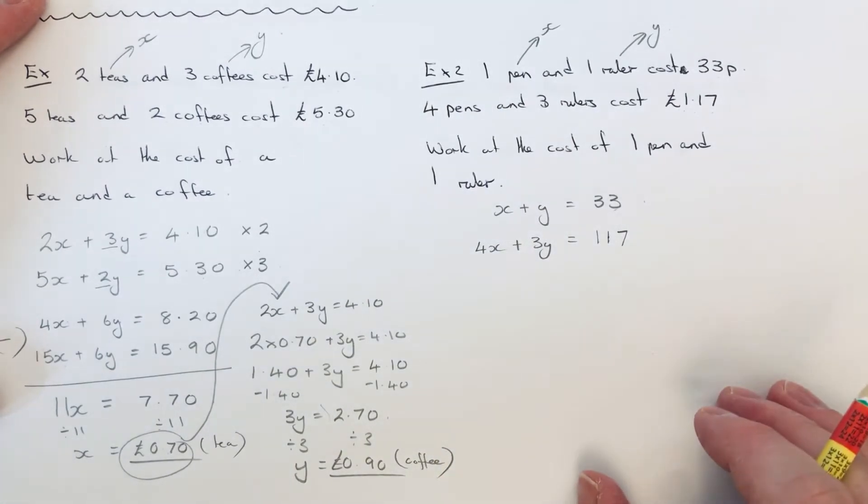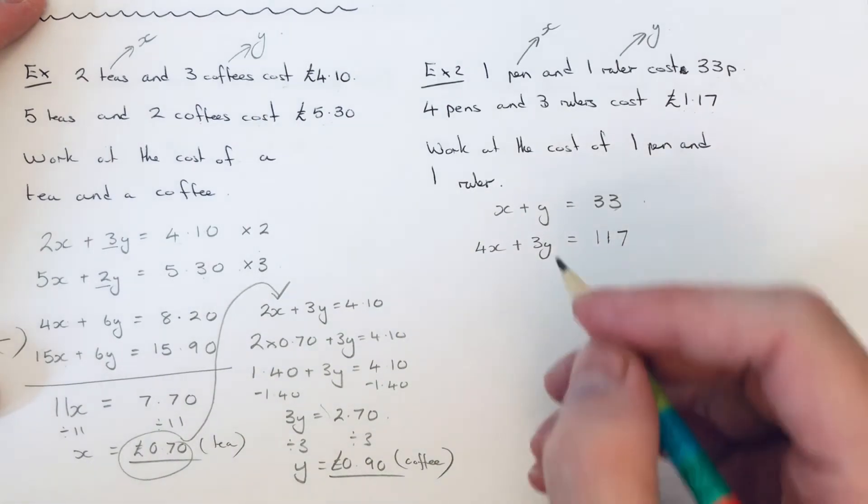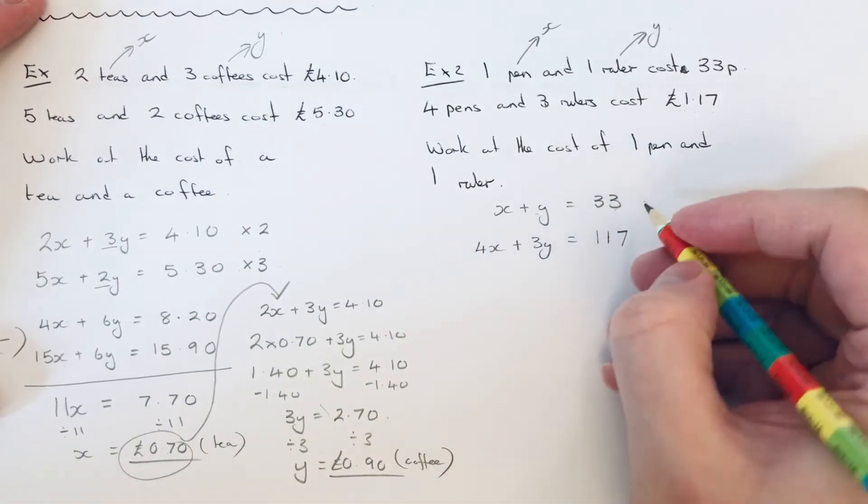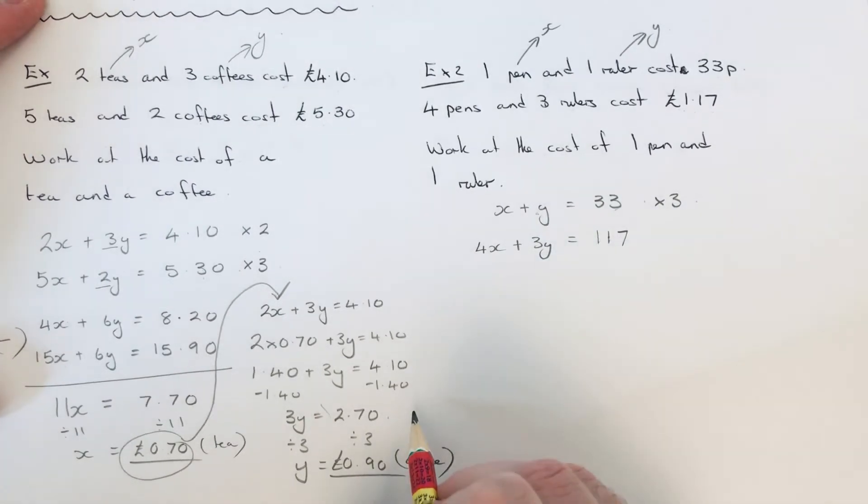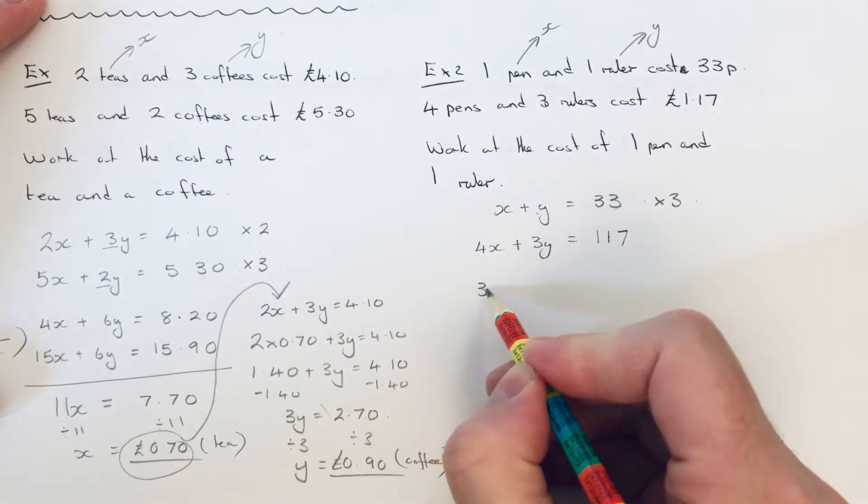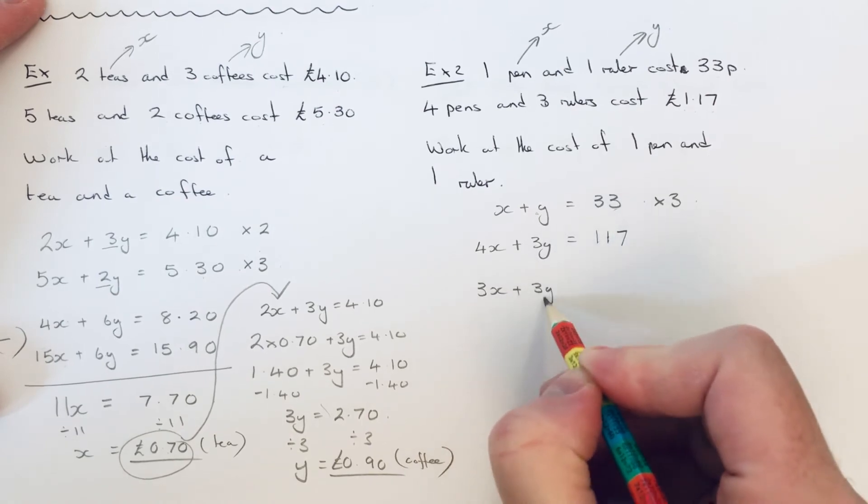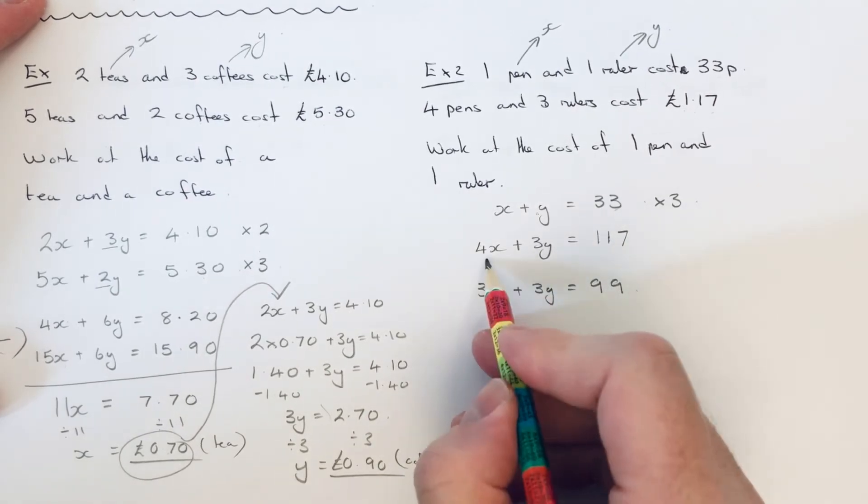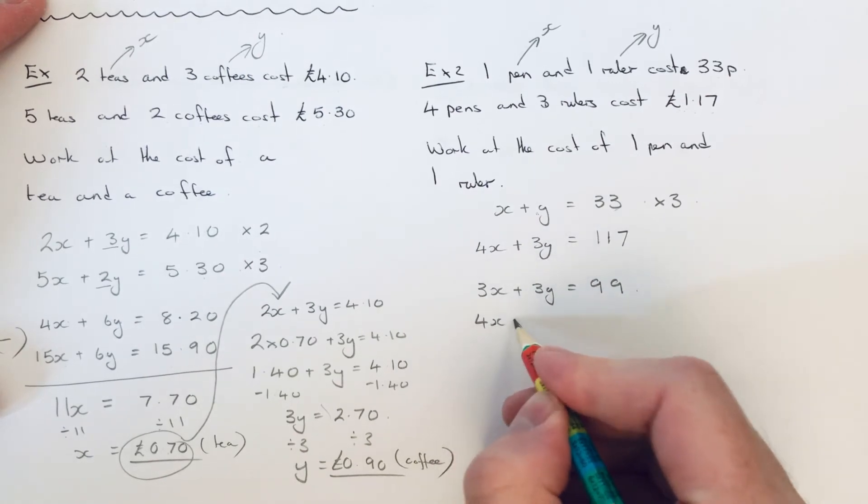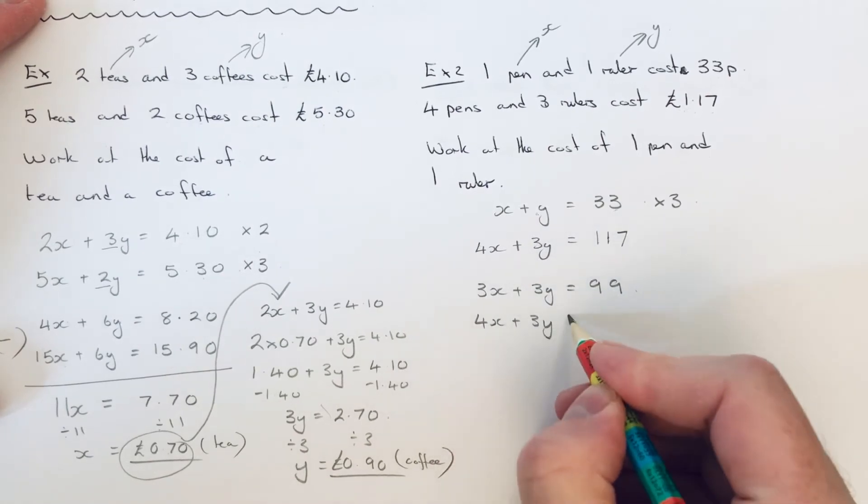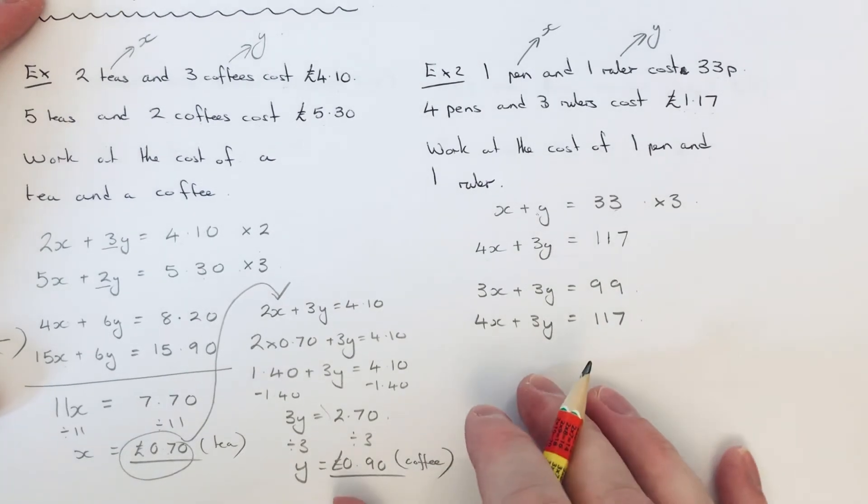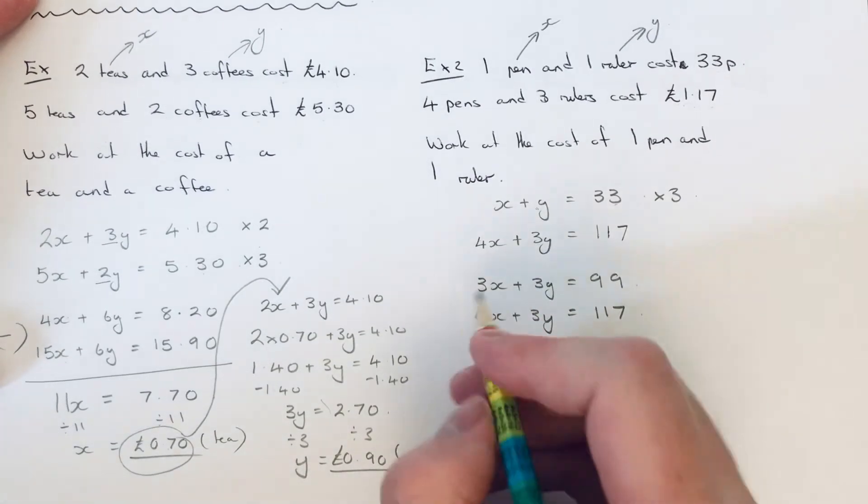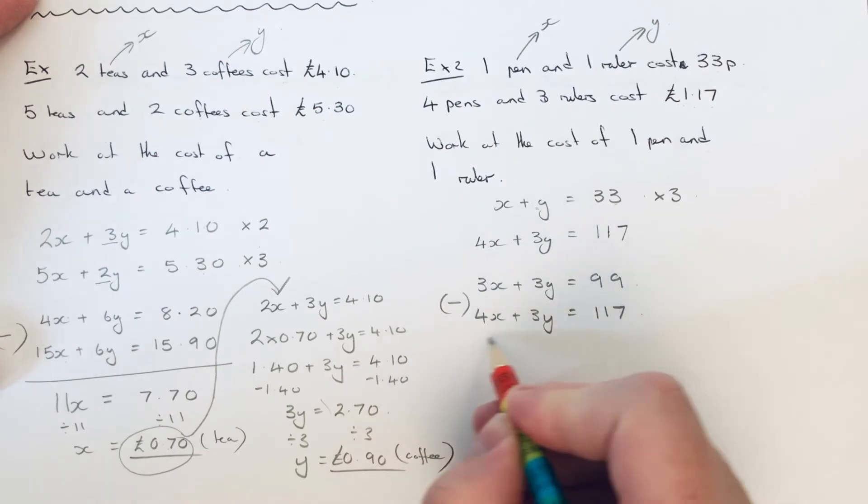So again let's eliminate the y variables. So to do that let's make the numbers before y the same. So we just need to multiply the first equation by 3. So that will make it 3y. So we've got 3x plus 3y equals 99. And if I just copy the second one down. So again since we've made the y's the same, we just need to take these away to eliminate the y variable.